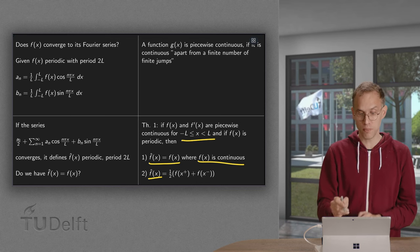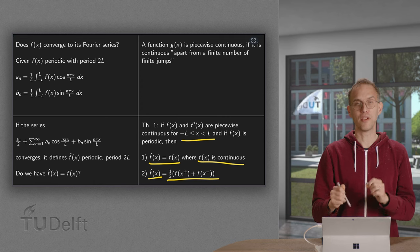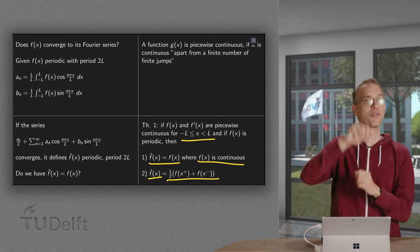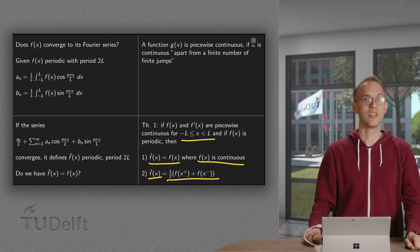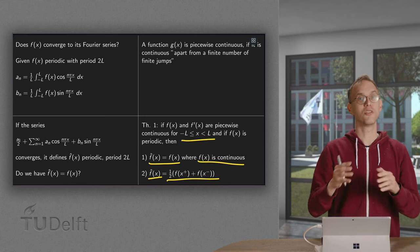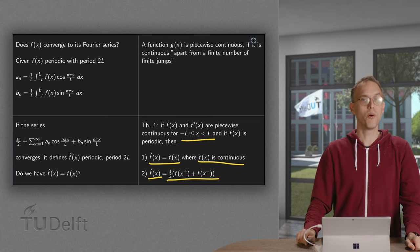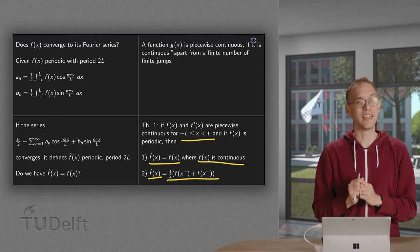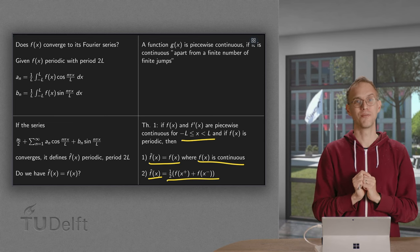Well, at the point where you jump, your f̂ converges to the average of your original f. So that is a really nice theorem, the theorem of Fourier, which tells us that a very broad class of functions has indeed a Fourier series. Thank you.